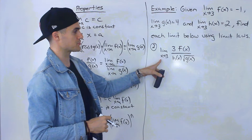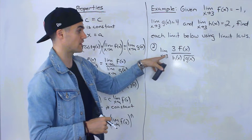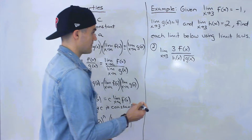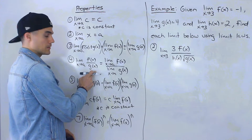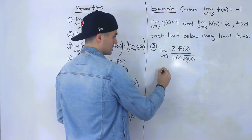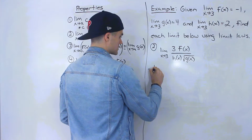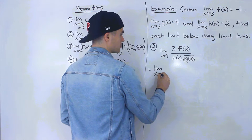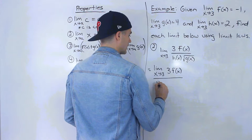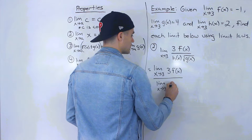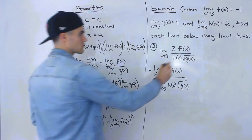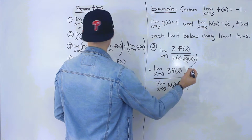Moving on to number 2: we have the limit as x approaches 3 of 3 times f of x, all over h of x times the square root of g of x. The first step is to apply limit law number 4 again, because this is again a rational function. So we distribute that limit as x approaches 3 to the numerator, and the limit as x approaches 3 to the denominator.